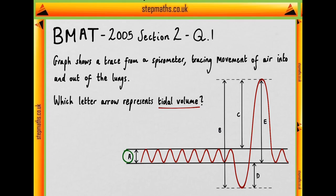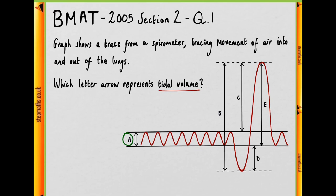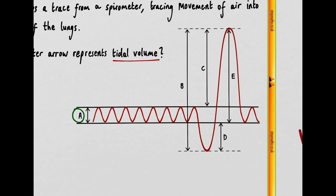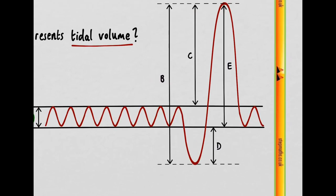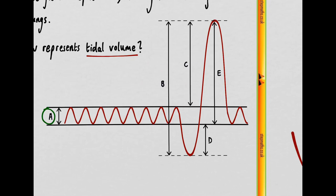So moving on, we've already got our answer which is option A but let's move through and figure out what B, C, D and E are just in case. So B we can see represents the total amount of air both when deeply exhaled and deeply inhaled so this represents the vital capacity of the lungs.